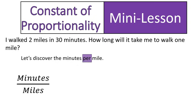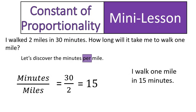And I set it up as a fraction. Minutes per mile. This is why it's important to write it out, because sometimes you might get confused on whether it's minutes or miles — which one goes in the numerator, which one goes in the denominator. Write it out: something per something else, and it'll help you get it set up correctly. This is minutes per mile, so I put the minutes in the numerator, miles in the denominator. I divide, and my answer is 15. In other words, I walk 1 mile in 15 minutes. And that's a much more normal way of talking about how far you walk.